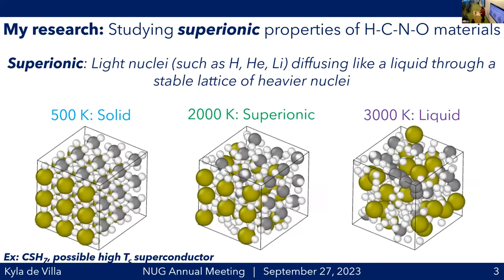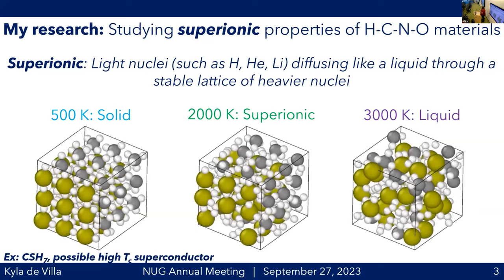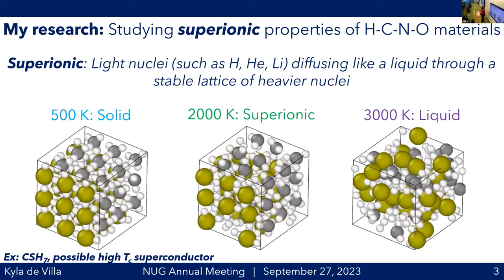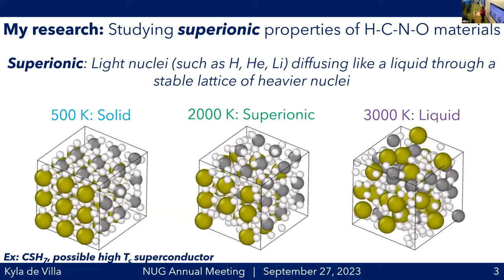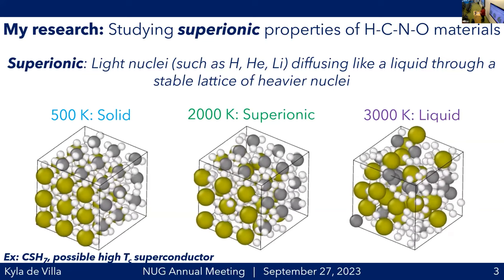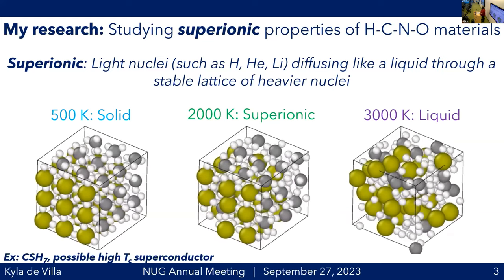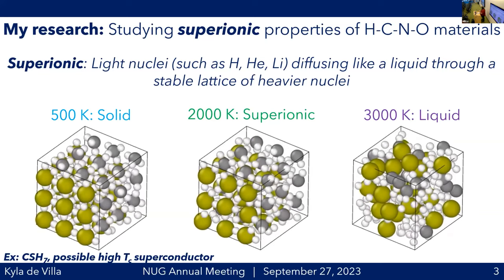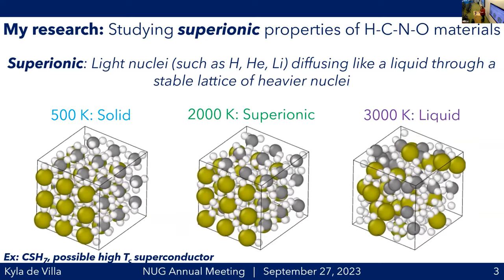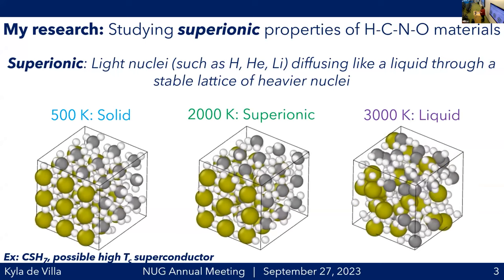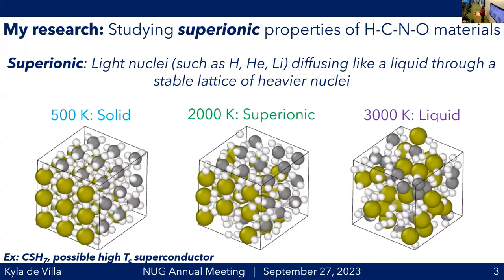These simulations were performed for CSH7, which at the time had just been predicted to be a high temperature superconductor at very high pressures. On the left you see a solid with a crystalline structure — fairly regular, atoms are vibrating at finite temperature but nothing's diffusing. On the far right you have the opposite, a liquid, where all crystal structure has decomposed and all atom types are diffusing. In the middle is what I focused on studying: a phase we call super ionic, where the carbon and sulfur have maintained that regular crystalline structure and are still solid, while the protons are diffusing through like a liquid.